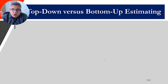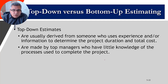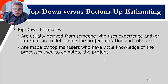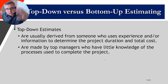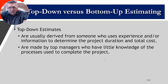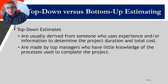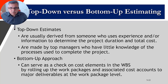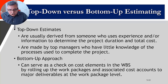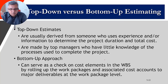Top-down estimates are used by someone with experience in a similar project. Even without full knowledge of the new project, they can relate it to a previous one and estimate the duration based on size, then break those estimates down across major deliverables and sub-deliverables on the WBS. Bottom-up estimates work the opposite way: once you finish your WBS and have the WBS dictionary, you associate cost and time to each work package, then add those up to get the project total.